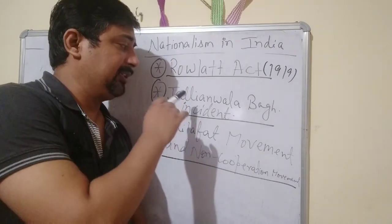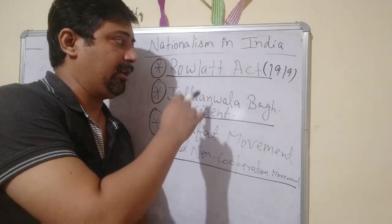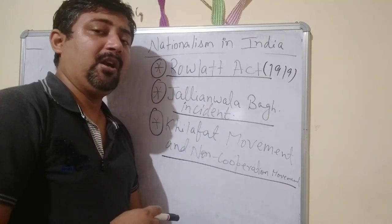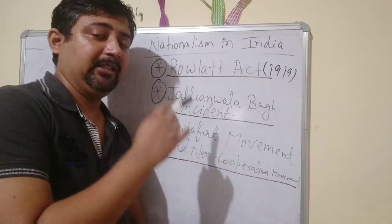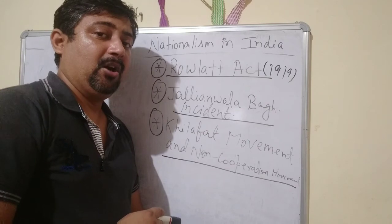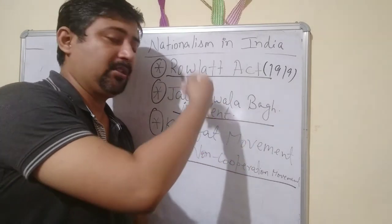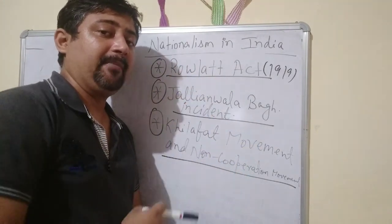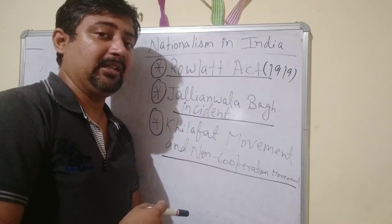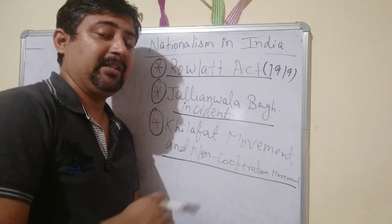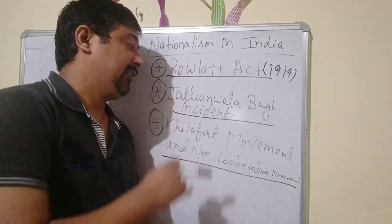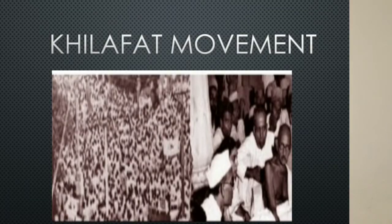After these events, Gandhiji understood that in order to teach the Britishers a lesson, what was needed was a mass movement. People were not united at that time, and the movements going on before were small and localized, confined to only some areas. Gandhiji decided that the British would not listen unless there was a mass movement. However, there was one problem — the Hindus and Muslims were not united and were moving in different directions, so Gandhiji thought that to start a mass movement, both communities needed to be connected.